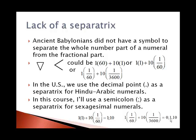Ancient Babylonians did not have a symbol to separate the whole number part of a numeral from the fractional part. The term for this is a separatrix. So if they have a symbol for 1 and 10, that could be 1, 60, and 10 ones, so 70. Or it could be that the 1 meant 1s place and the 10 was in the 60ths place, so 1 and 10 60ths. Or it could be that the 1 was in the 60ths place and the 10 was in the 3600ths place.